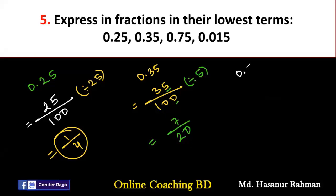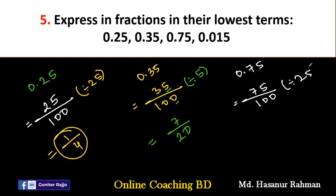Now, 0.75 — that is 75 by 100. We can divide this fraction by 25. So, 75 by 25 is 3, and 100 by 25 is 4. Therefore, 3 by 4 is the final answer.